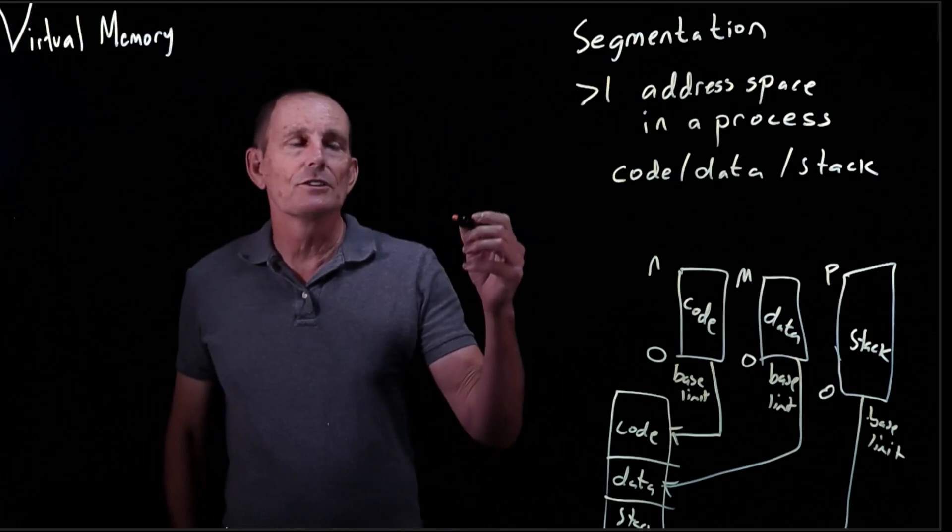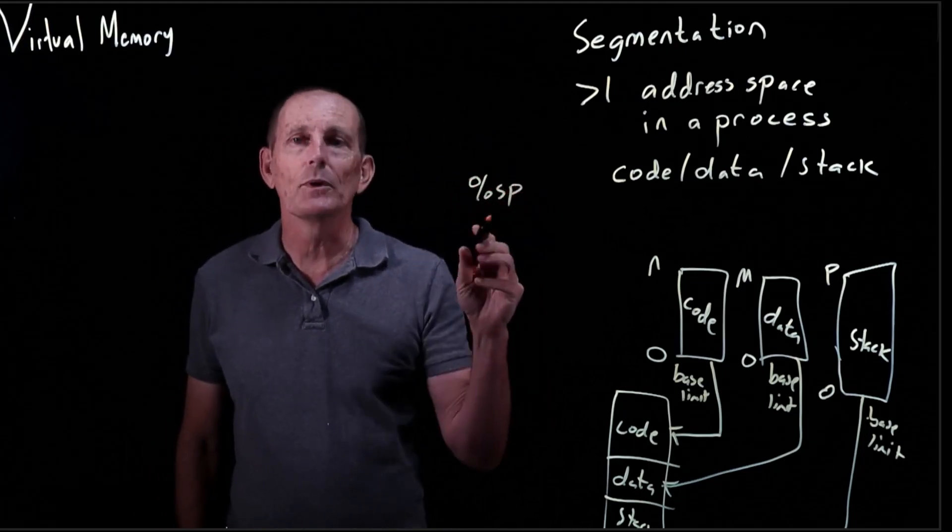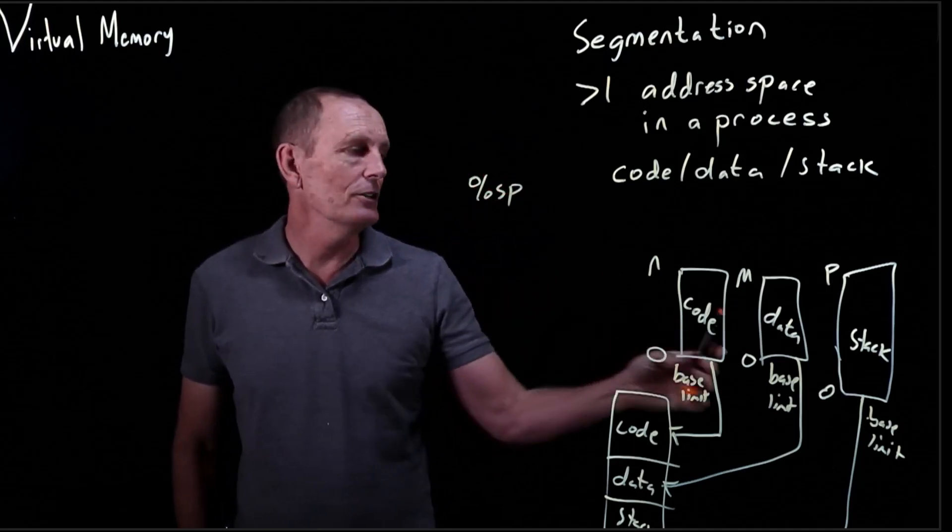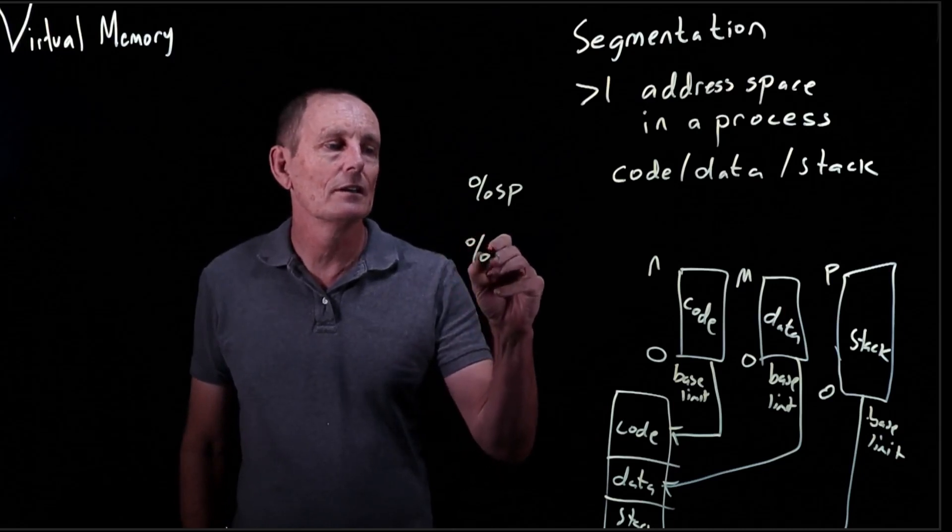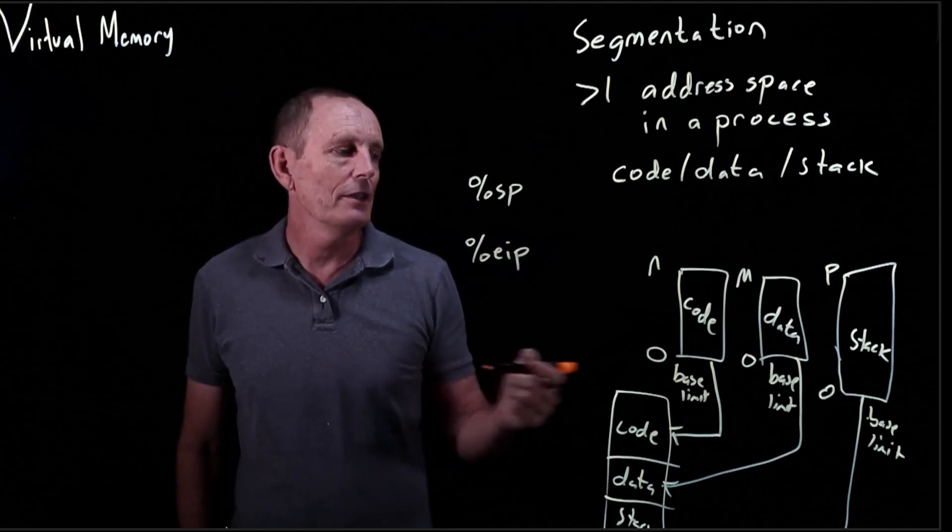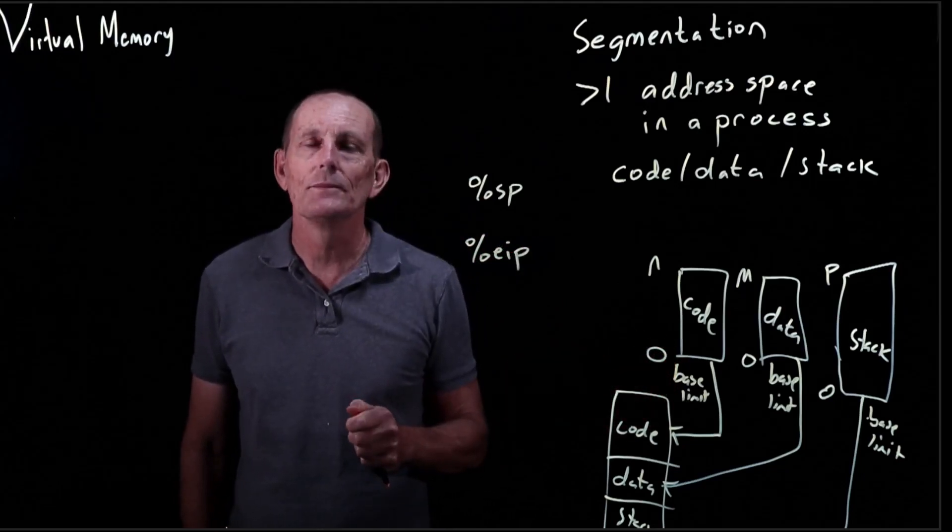For the x86, whenever you're using the stack pointer, there's always implicitly a use of the stack base and limit register. Similarly, if you're using the instruction pointer, there's always an implicit use of the base and limit segment register.